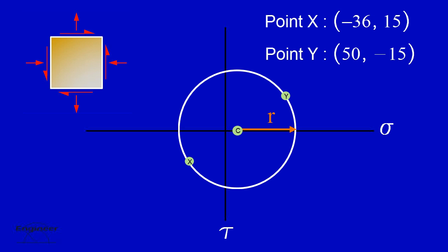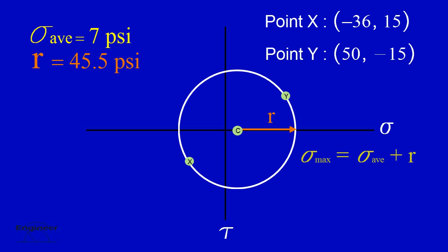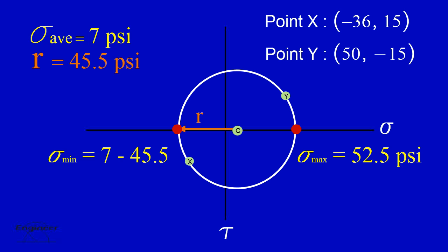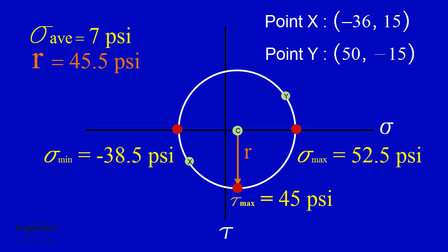The last step is to solve for the principal stresses and the maximum shear stress. The maximum normal stress is equal to the average stress plus the radius, which equals 52.5 pounds per square inch and is located on the rightmost edge of the circle. The minimum normal stress is equal to the average stress minus the radius, which equals negative 38.5 pounds per square inch and is located on the leftmost edge of the circle. Finally, the maximum shear stress is equal to the radius.